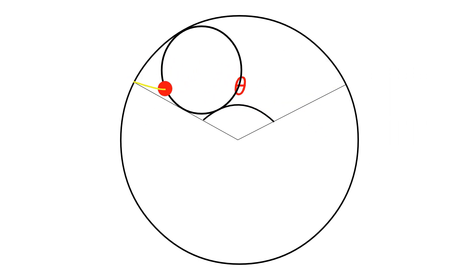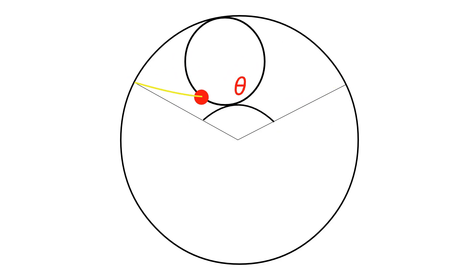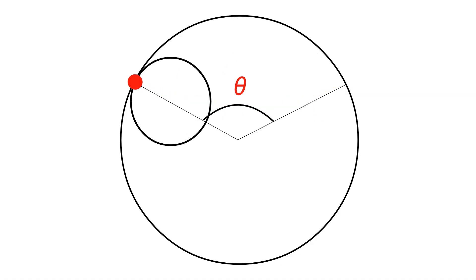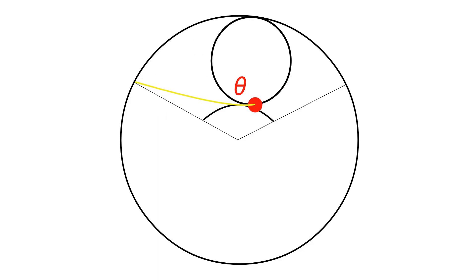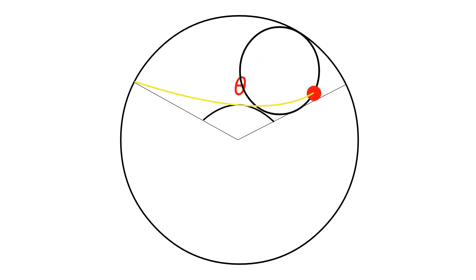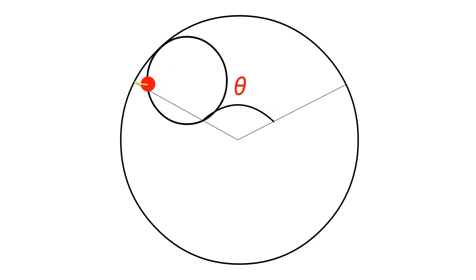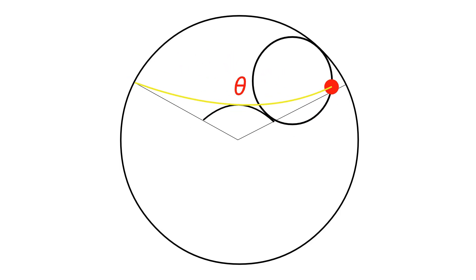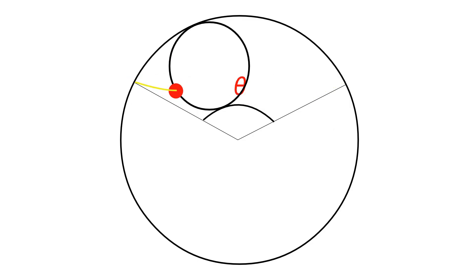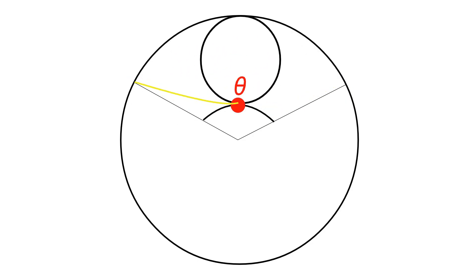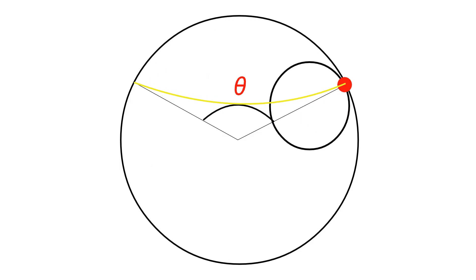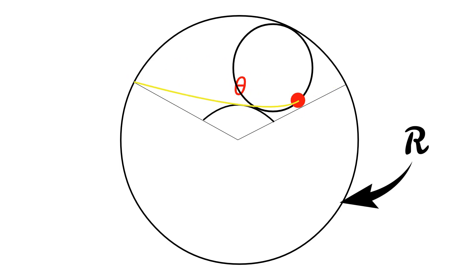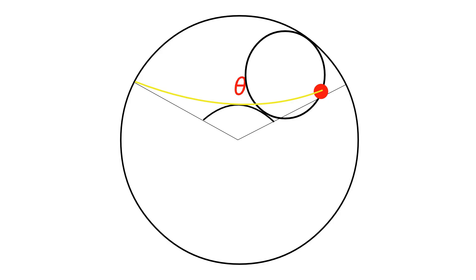Similar to the epicycloid, we are considering one rotation of the generating circle, but here it is on the interior of the directing circle. In one rotation, the generating circle moves a distance of π×b or 2πr, where r is the radius of the generating circle. Here also we have to calculate the angle of displacement in the form of a sector. The sector angle has the same formula as the epicycloid: θ = (r / R) × 360°, where small r is the generating circle radius.